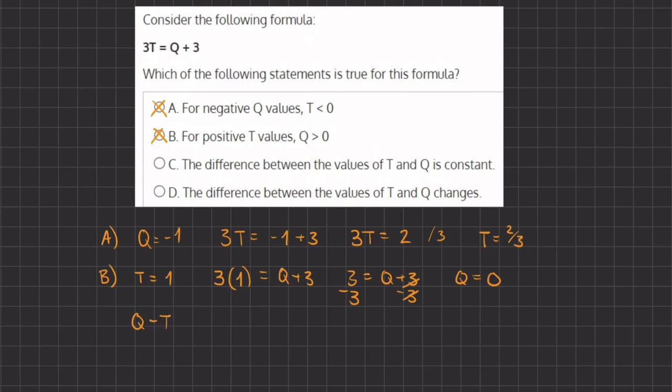So let's first understand what q is. If we isolate q, I'm going to subtract 3 on both sides. And we have here 3t minus 3. And that's the value of q.